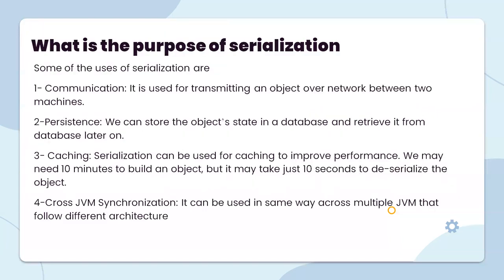What is the purpose of serialization? The main uses are persistence, caching, and cross-JVM synchronization. It is used to transmit an object over a network between two machines. Persistence allows storing objects in a database. Serialization can also be used for caching to improve performance — for instance, building an object may take 10 minutes, but deserializing it may take just 10 seconds.